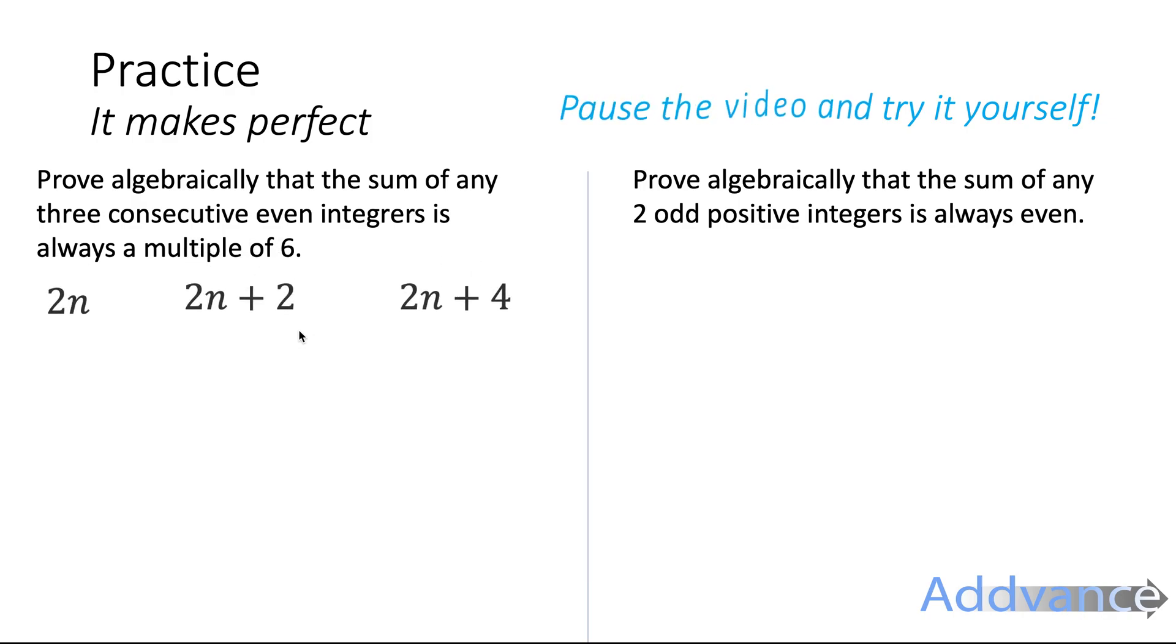I'm going to give you some hints. So consecutive even integers look like this: 2n, 2n plus 2, and 2n plus 4. Those are consecutive, they are next to each other, even integers. They are all even. We have missed out the odd numbers in between. Now this one, the sum of any two odd positive integers is always even. 2n plus 1 and 2m plus 1 is a way of writing two different odd positive integers. And it can be any two positive integers. Pause the video and try to solve those yourselves. It'll probably take you at least 10 minutes to do both questions.